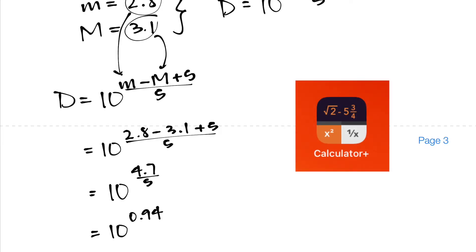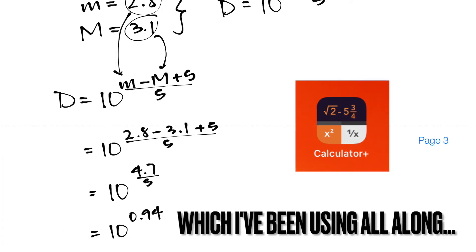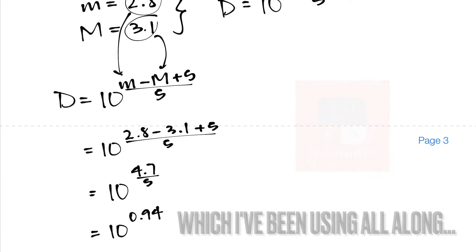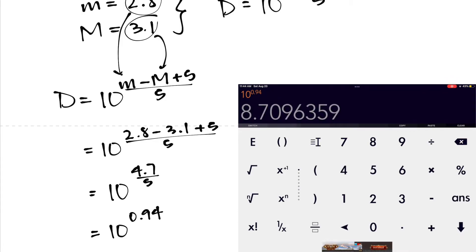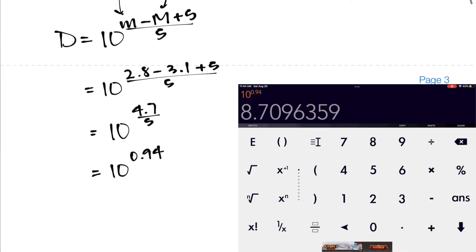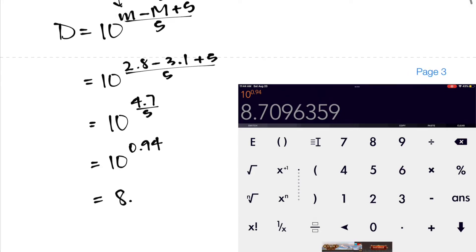So at this point now we have to do 10 to the power of 0.94. So using the app Calculator Plus I can go ahead and actually do the calculation myself by just plugging in some numbers. So let's do 10 and then to bring up a template for the exponent I will be pressing the x to the power of n button right here to bring up that potential spot for me to type in the next number. So now I'll type in 0.94, press enter, and that's going to give me my answer for right now: 8.7096359.